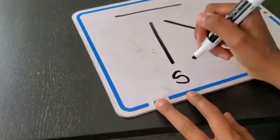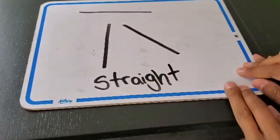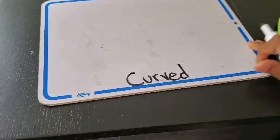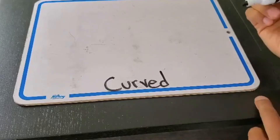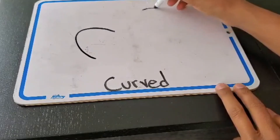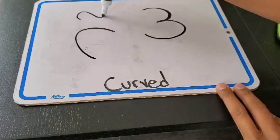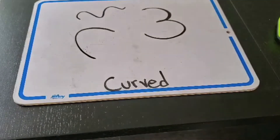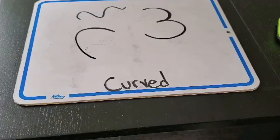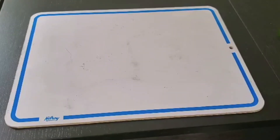The next type of line is called a curved line. Curved lines are curvy. A curved line can look like this, or like this, or like this. These are called curved lines — they have a curve to them and they're not straight like a straight line.